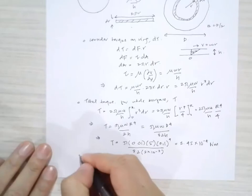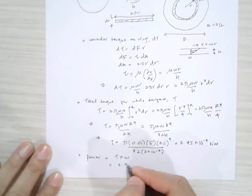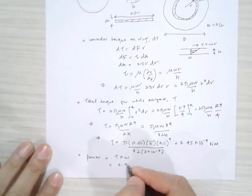For the last part, we are asked to find the power. Power is straightforward — it equals torque multiplied by omega. So power equals 2.45 times ten to the minus four multiplied by omega equal to 5 radians per second, giving approximately 0.001225 watts.